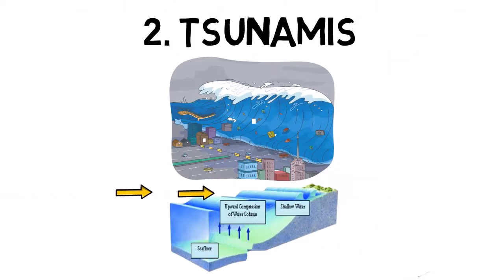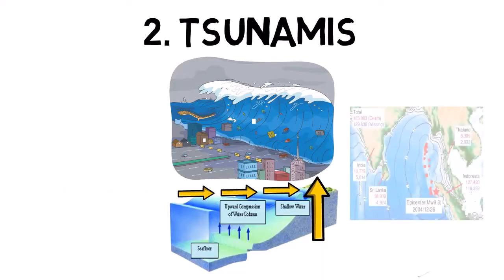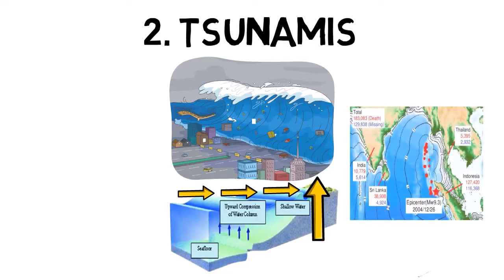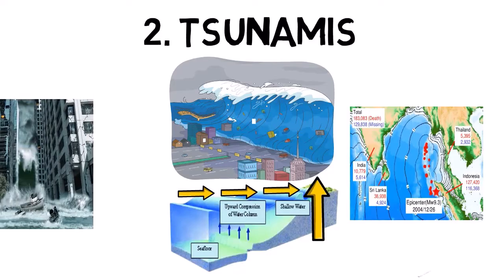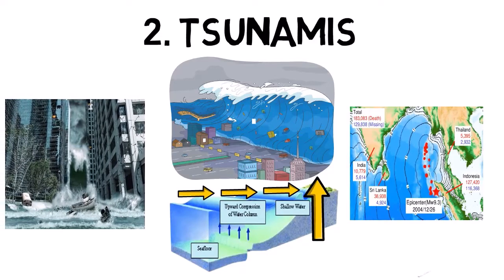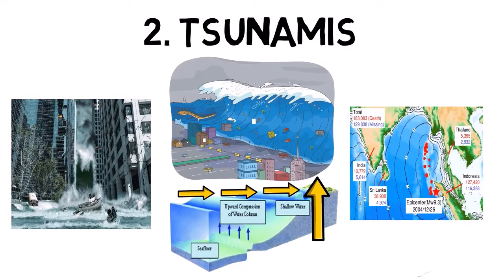As these waves approach shallow coastal waters, they increase in height, potentially reaching tens of meters. Tsunamis can inundate coastal areas, causing widespread destruction and loss of life. They are particularly dangerous because they can strike with little warning and have the power to sweep away buildings, vehicles, and people.